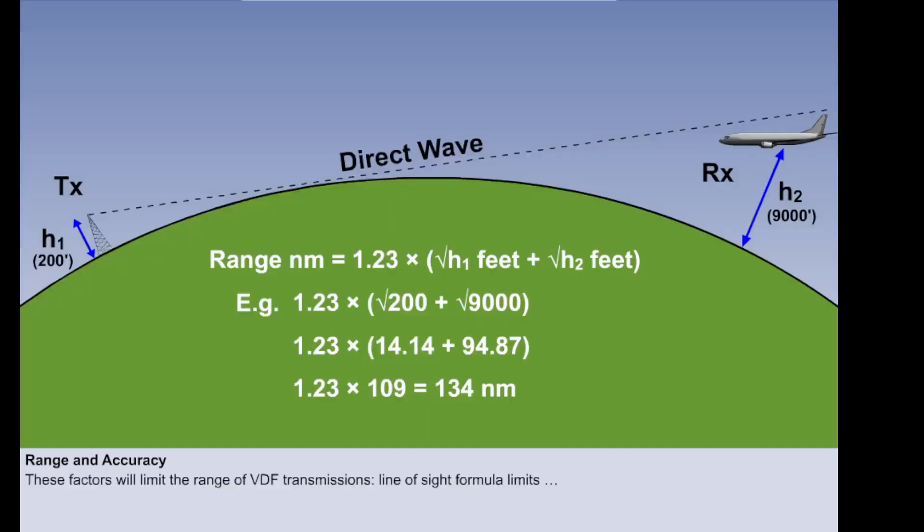Several factors affect the range of VDF transmissions. As VDF utilizes the VHF band, or sometimes the UHF band, the range in nautical miles will obey the line-of-sight formula of 1.23 times the sum of the square root of the height of the receiver in feet and the square root of the transmitter in feet. So, the higher the aircraft, the better.